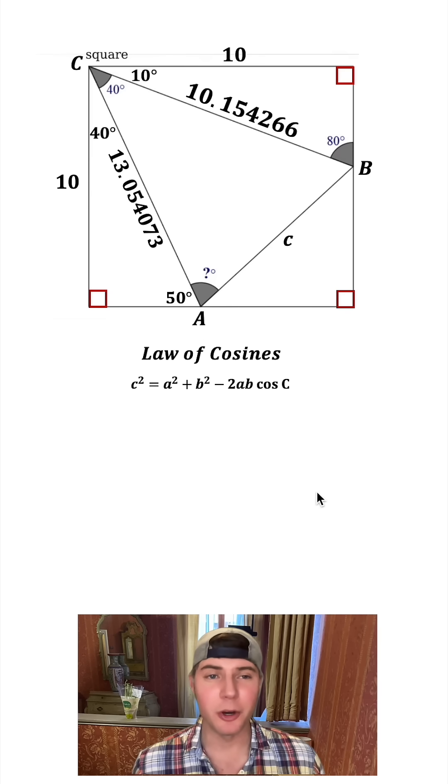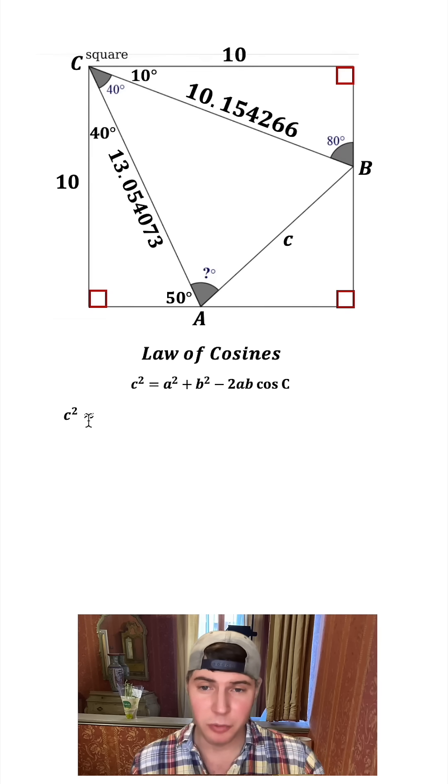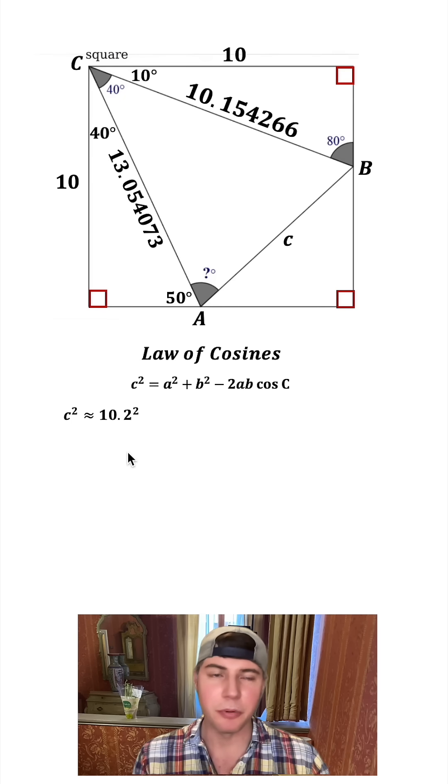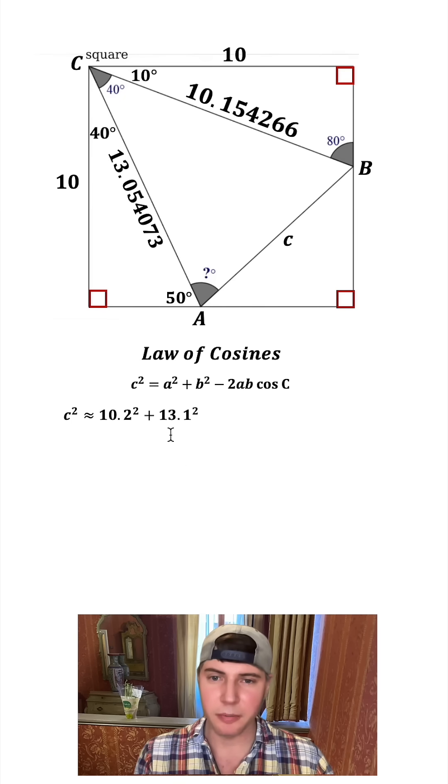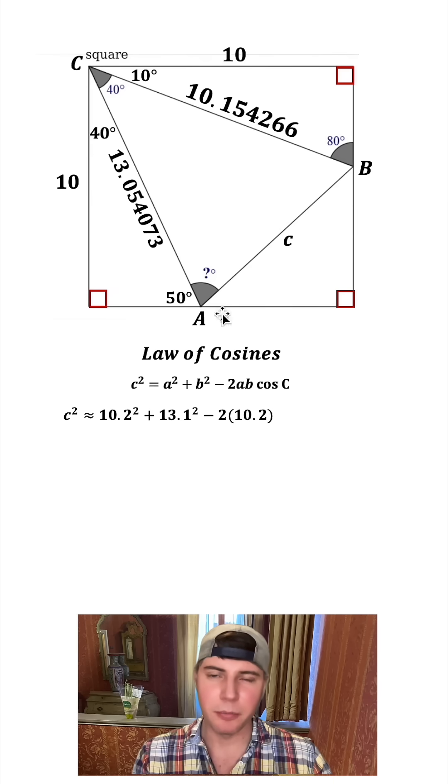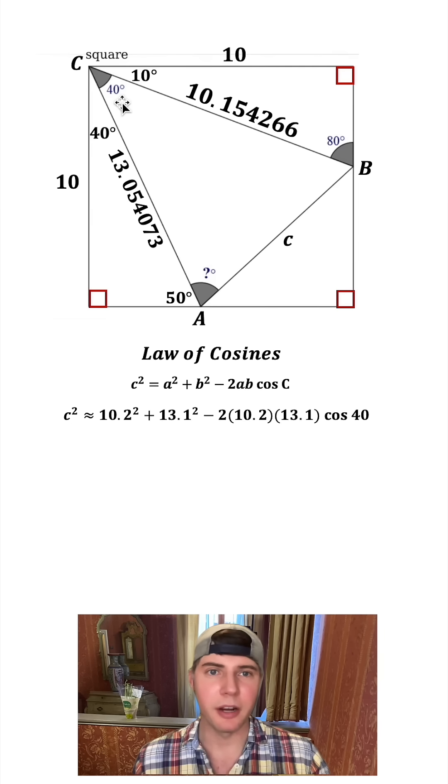And now we're going to use law of cosines. So the C we don't know, so I'm just going to put C squared. I'm going to change this to a squiggle mark because we're going to be doing some rounding. So A was this thing right here, so I'm going to put 10.2 squared. B was this right here, so I'm going to put 13.1 squared. And then we have a minus, and then 2, and then A once again was the 10.2, and B was this 13.1. And then we have cosine of C, well capital C is this angle 40 right here.